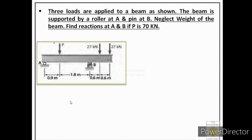The first step is to locate the reactions or constraints provided by these two supports. This is a roller support, so it will provide only one type of constraint that is normal to the surface. A pin support provides two constraints — one normal to the surface and one along the surface. So we have labeled a normal constraint at A as reaction at A in the Y direction.